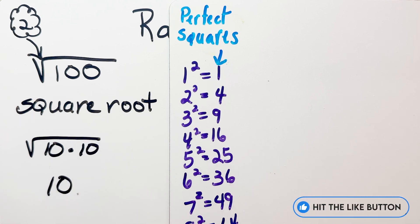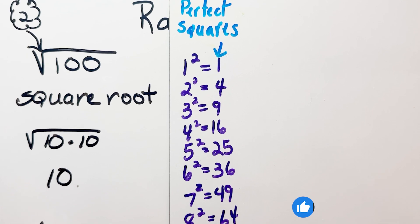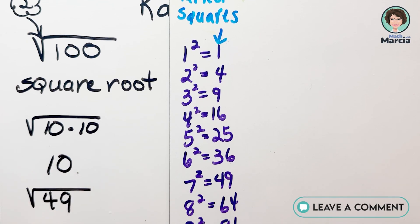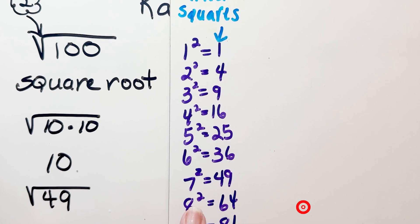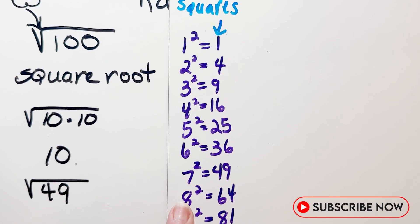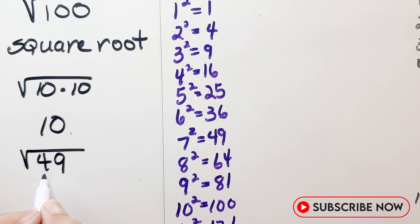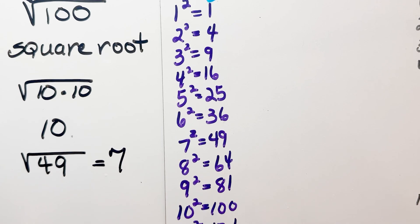It's telling me that I'm multiplying 10 twice in order to get 100. So if I were to do the square root of 49, I look at my listing and think about the perfect squares — when I get down to where 7 squared is, I see it's 49. So the square root of 49 is equal to 7.